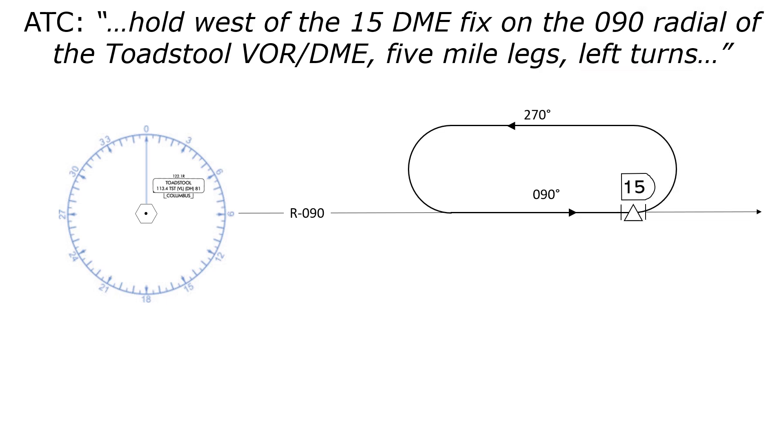Again, notice that the hold is west of the fix, as instructed. Also notice that the outbound leg, 270 degrees, isn't on any radial. There's no guidance to follow on that outbound leg. This makes sense. A slower aircraft will make a tighter turn and fly the outbound leg closer than a faster jet would. But we're all just getting in line to go back down that amusement park ride, the inbound leg, which does follow the same course.